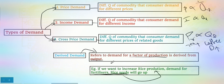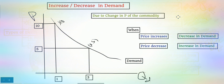In derived demand, we don't want to increase the demand for the goods themselves, but when pursuing an objective like production, we are in need of those inputs. So those are the types of demand. So far we have seen the law of demand, determinants of demand, and types of demand. Now we are going to see how price and income affect the demand curve. Due to a change in price of the commodity, an increase or decrease in demand occurs.